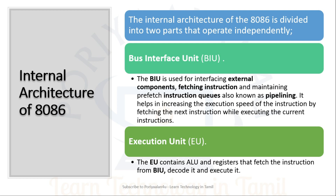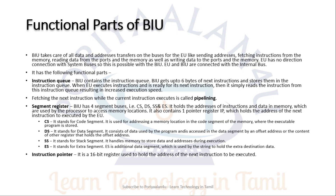The next unit is the Execution Unit, which is the core of the microprocessor. It contains the Arithmetic Logic Unit and the registers. The Bus Interface Unit has three major functional parts: the instruction queue, segment registers, and the instruction pointer. The BIU takes care of all address and data transfer to the bus and to the EU, including sending data and addresses to memory, and reading and writing data from memory.